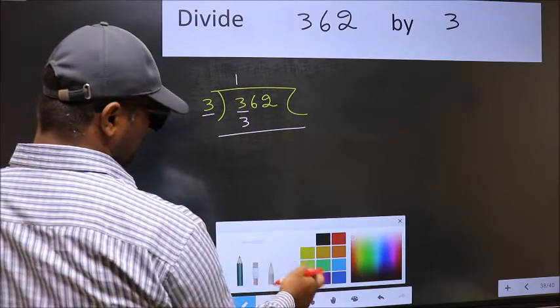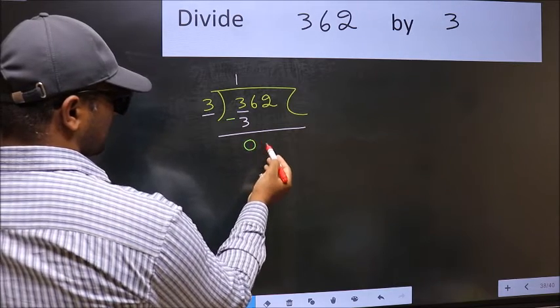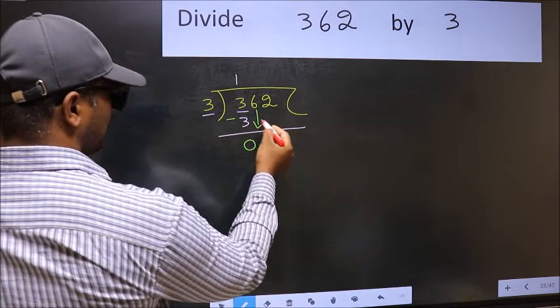Now you should subtract: 3 minus 3 equals 0. After this step, bring down the beside number.